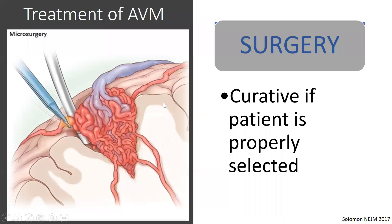Surgery is ultimately curative because you want to remove the AVM and hope it doesn't come back. But surgery is also not without risk — you can have bleeding, infections, and strokes. These are part and parcel of all the elements combined. But if surgery is done in a very methodical fashion with a very good understanding of the anatomy of the AVM, and taking into consideration your comfort level and skill as a surgeon, then eventually the outcome will be as desired based on the data available in scientific literature.